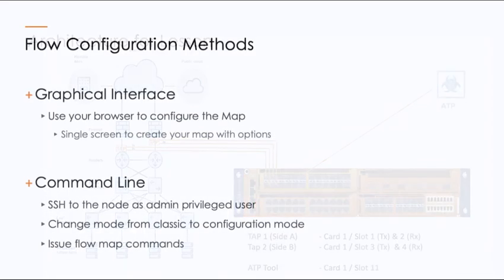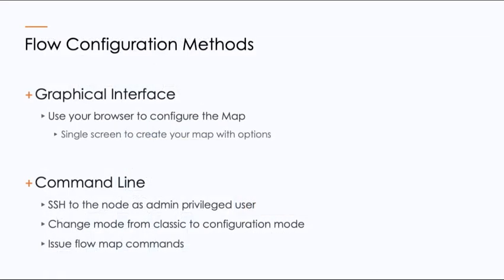We can configure our flows a couple of different ways. We're going to demonstrate doing it through the graphical interface, which is a much easier way to do it. We can also do it via the command line. In order to do that, you would SSH into the command line as a privileged user, authenticate, change your mode from classic to configuration mode, and issue the commands, which we will cover.